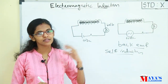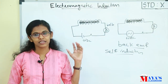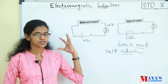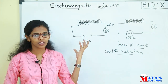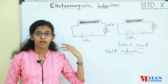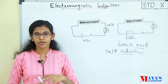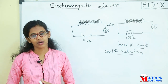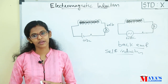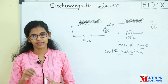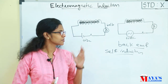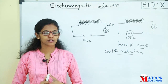In DC, there is no change in magnetic flux or direction, and therefore no back EMF is produced. That is why there is no self-induction effect in DC. This phenomenon is called self-induction.